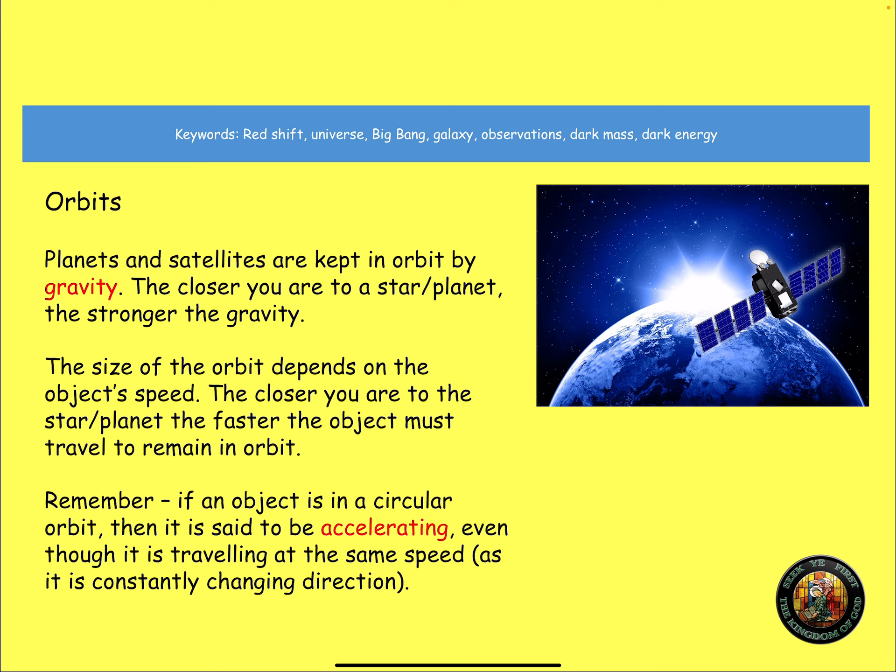Now then, orbits. Planets and satellites are kept in orbit by gravity. The closer you are to a star or a planet, the stronger the gravity. Now, the size of the orbit depends on the object's speed. That's crucial, that. Otherwise, the object would get pulled in. Gravity would just pull the object in. The closer you are to the star or the planet, the faster the object must travel to remain in orbit. If the velocity, if the speed slows down, then the orbit will shrink, the object will move closer to the star or the planet.